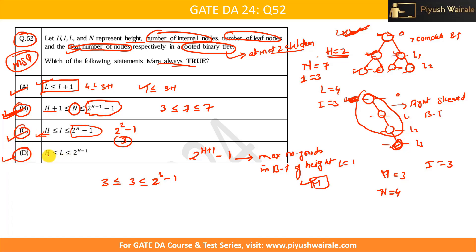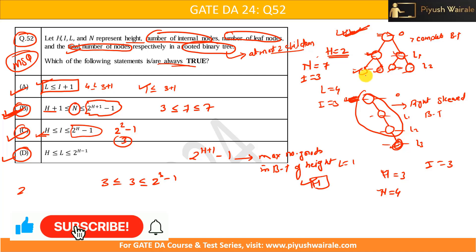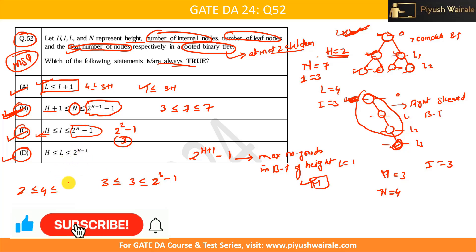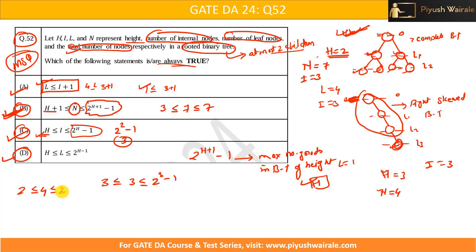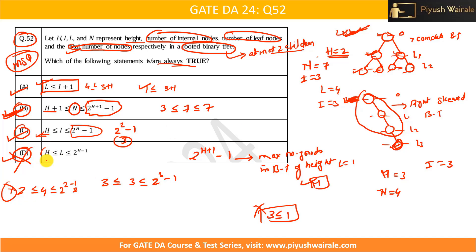For option D: h is height and l is number of leaf nodes. For the complete binary tree, height is 2 and leaf nodes are 4. The condition requires h less than or equal to l, so 2 is less than or equal to 4 — satisfied. But the upper bound 2 to the power (h-1) equals 2 to the power 1 equals 2, and 4 is not less than or equal to 2 — this condition is NOT satisfied. For the skewed tree, height is 3 and leaf nodes are 1, so 3 is not less than or equal to 1 — again not satisfied. Option D is not correct.